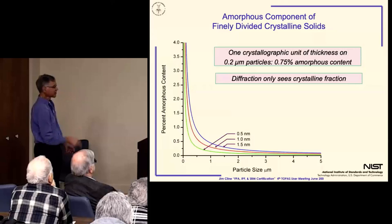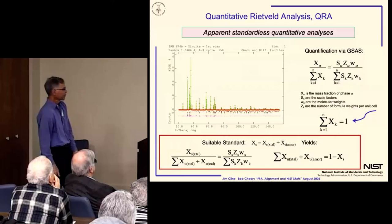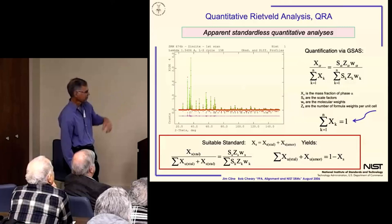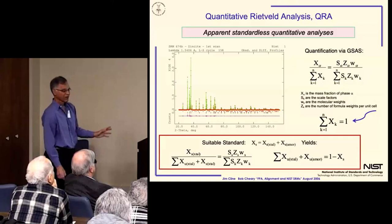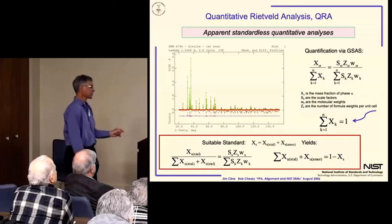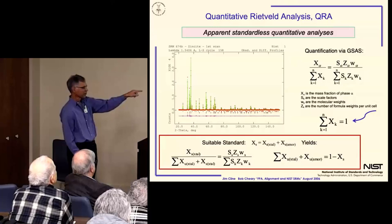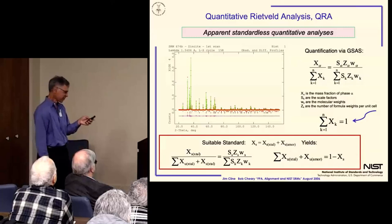The diffraction experiment, of course, can only see the crystalline. So here we are with Rietveld GSAS. And again, we have the same problem that you have to assume you know all of the materials in your specimen, which you can't. So if you had a suitable standard that was certified with respect to its amorphous content, you would get another equation that would allow you to solve this issue and measure the amorphous content of an unknown. So of course, that's what we set out to do.